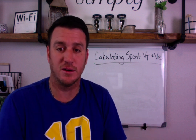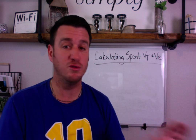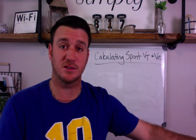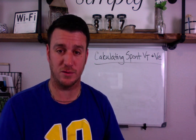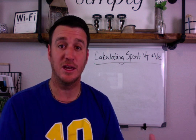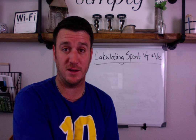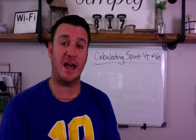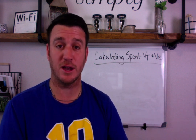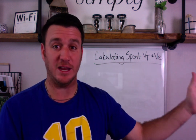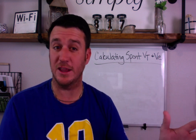In assist control, there is no spontaneous breathing to calculate — all tidal volumes are set by the ventilator, so we don't need to talk about assist control. In pressure support ventilation, it's all spontaneous breathing, so you simply take your minute volume divided by your respiratory rate to get your average spontaneous tidal volume. That's pretty straightforward — everything belongs to the patient.